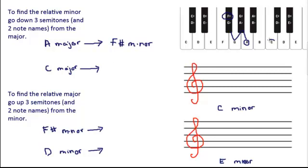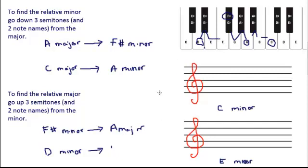Let's try C major. If we want to find the relative minor, we go down three semitones and two note names and we'd end up on A, which means it would be A minor. Since C major has no sharps or flats, A minor would also have no sharps or flats. Now, to figure out the relative major, we go the other direction — up three semitones and two note names from the minor. Starting on F-sharp minor and going up, we end up back on A major. Let's try from D minor: going up three semitones and two note names, we end up on F major. So both those keys are relatives and share the same key signature.